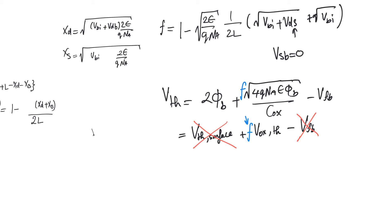This is an effect similar to the body effect, although its physical origin is completely different. For long-channel transistors, F tends to 1 and the middle term of the threshold voltage returns to its original value. This discussion is fine so far, but we have to justify why we multiplied F by this middle term specifically.